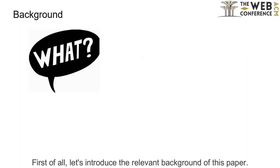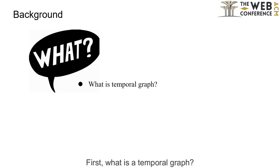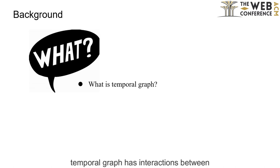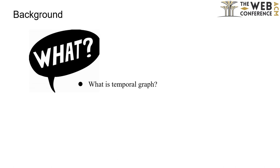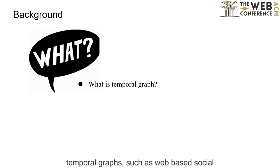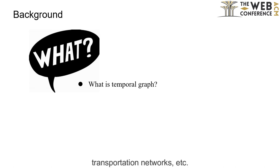First, let's introduce the relevant background of this paper. What is a temporal graph? A temporal graph has interactions between nodes that evolve over time. Many real-life networks are modeled as temporal graphs, such as web-based social networks, communication networks, transportation networks, etc.